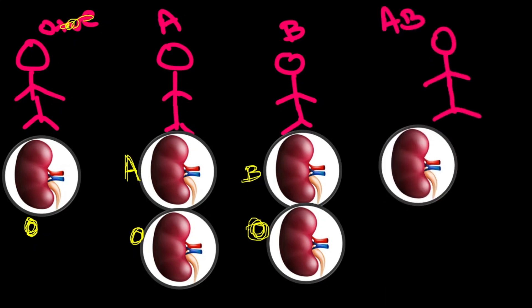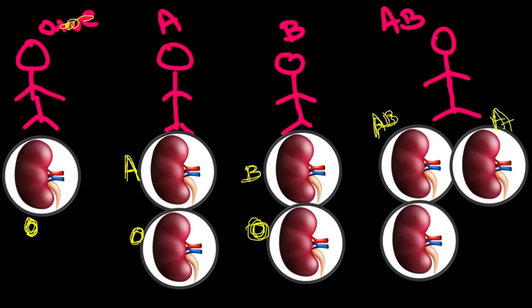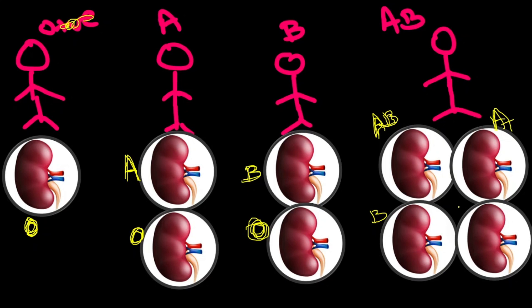An AB blood group patient can accept a kidney from an AB donor, an A donor, a B donor, and also an O donor — so AB recipients can accept from all four blood groups.